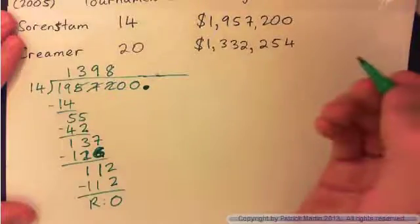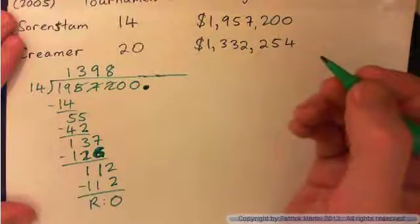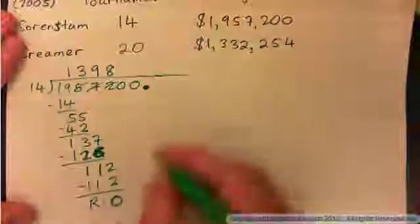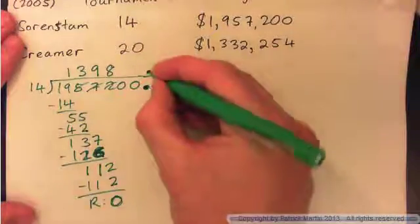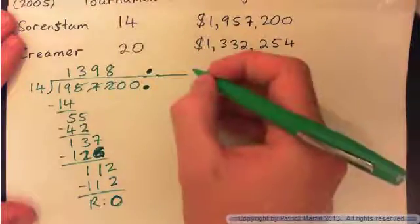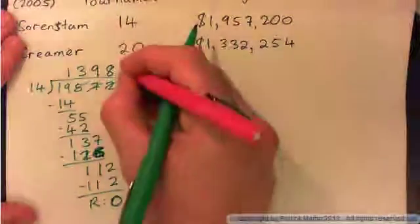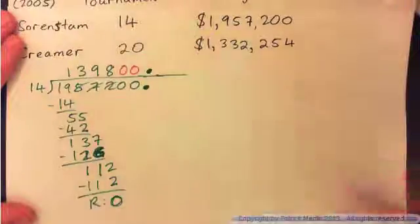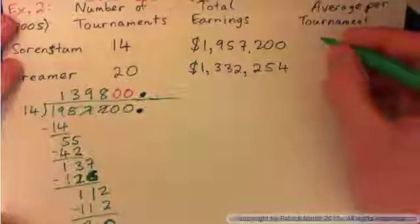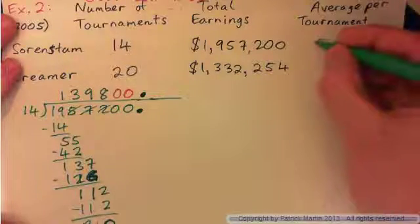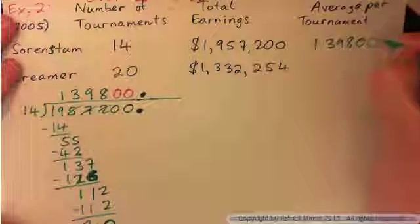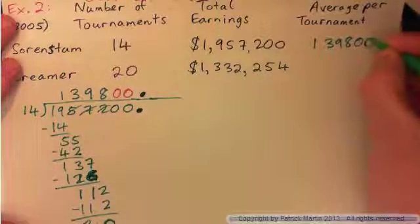But is the answer 1,398? I don't think so — the decimal point in the question is all the way over here. Where should the decimal point be in the answer? There are two spaces left over, so you've got to fill in those two spaces. The average earnings per tournament for this golfer is $139,800.